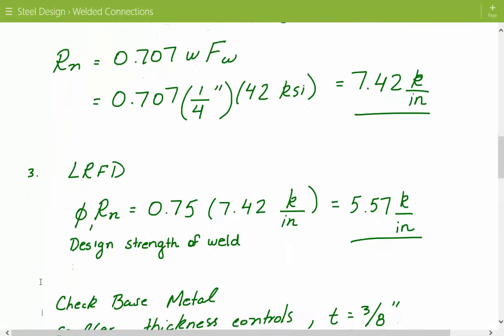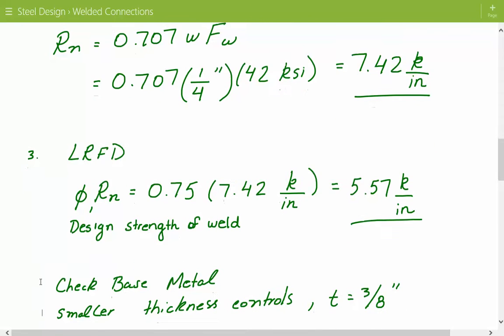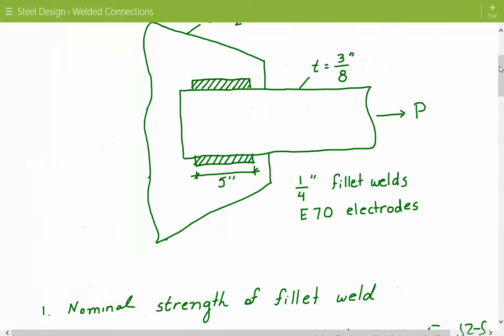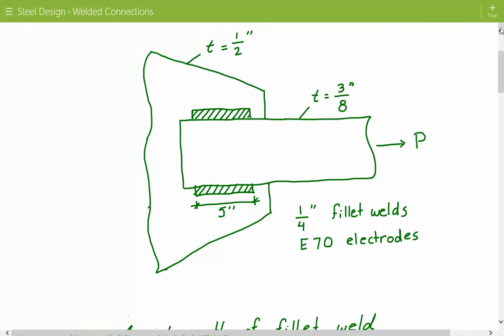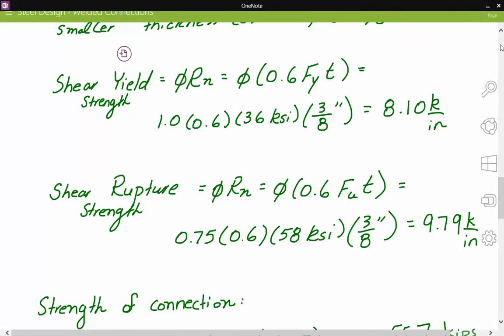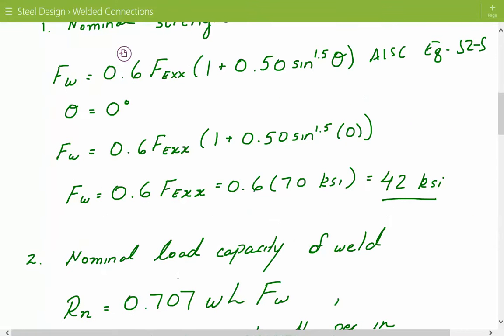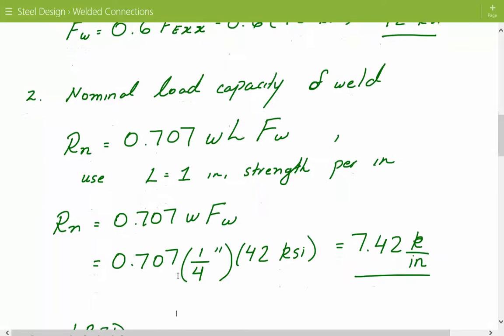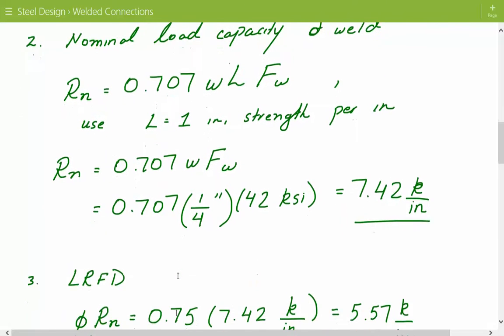We also have to check the strength of the base metal. Since we have two different thicknesses — the gusset plate at half inch and the tension member at three-eighths inch — the smaller thickness controls, which is the tension member at three-eighths inch. We will check both base metal shear yield and base metal shear rupture.